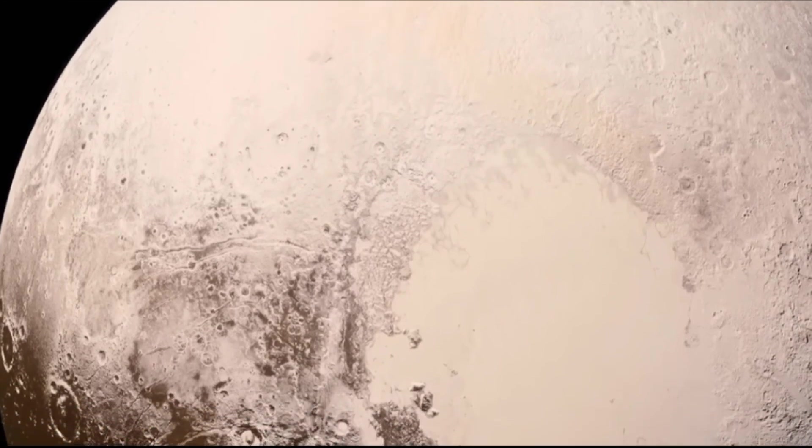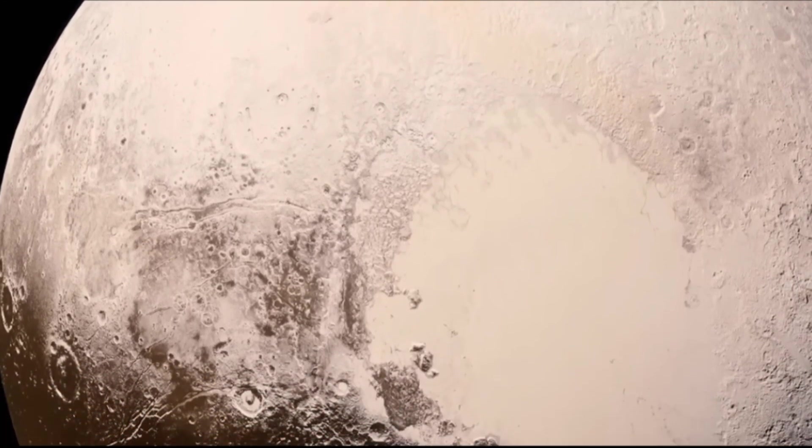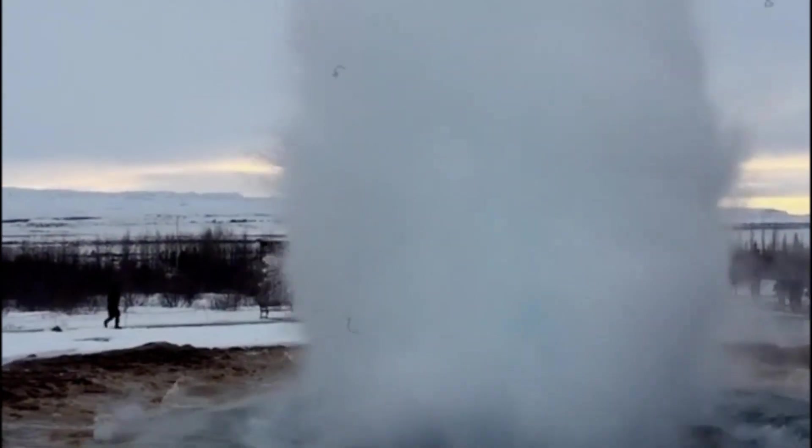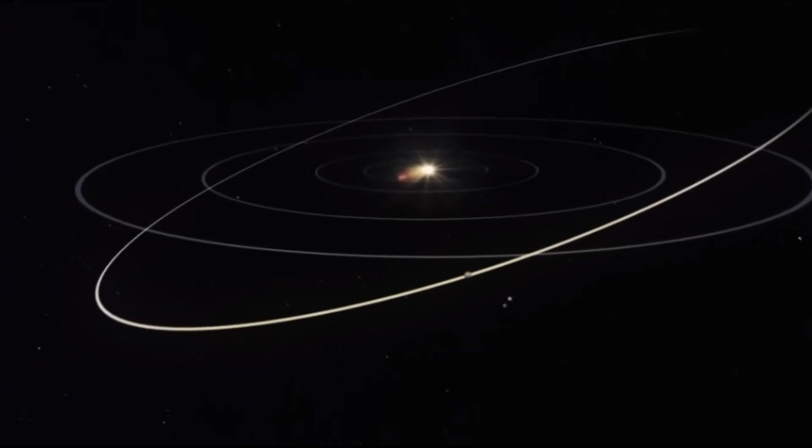Charon's surface is presumed to be rich in water ice and there is a possibility of cryogeysers, eruptions of water vapor, and other substances from beneath the surface similar to its companion in orbit.